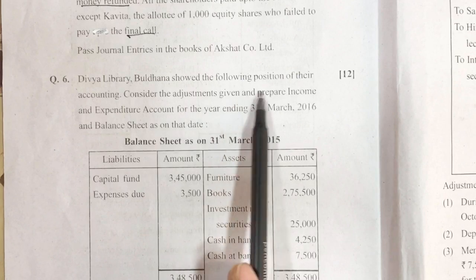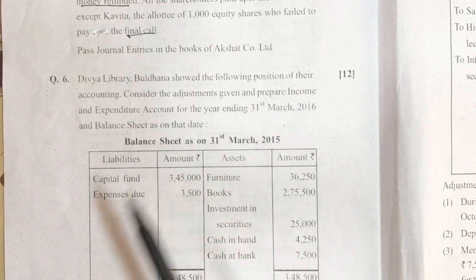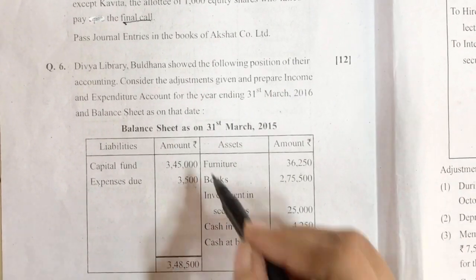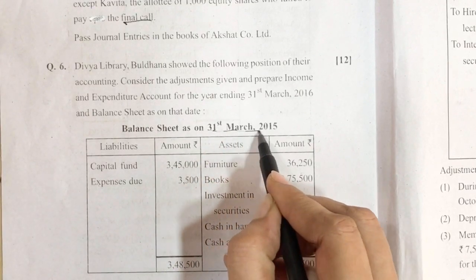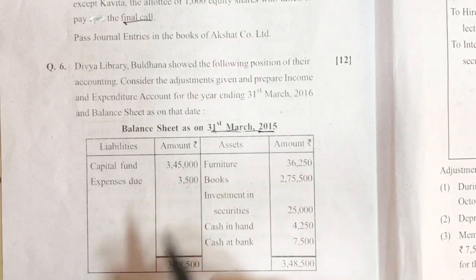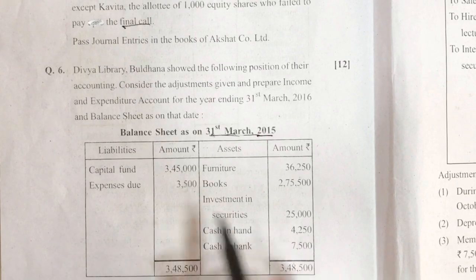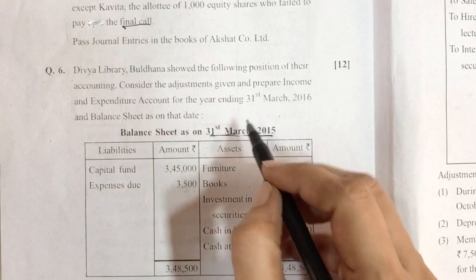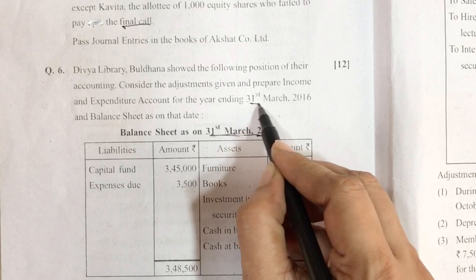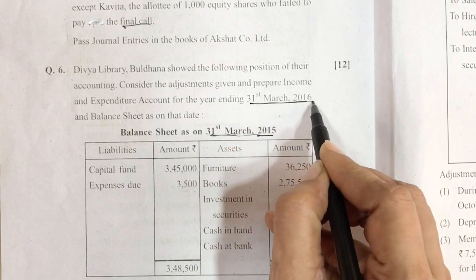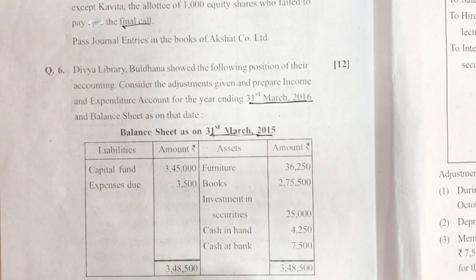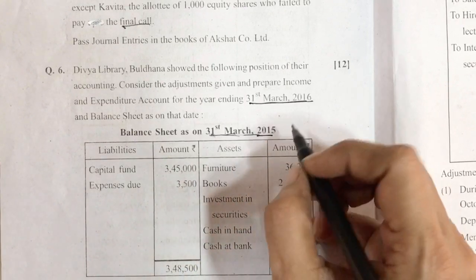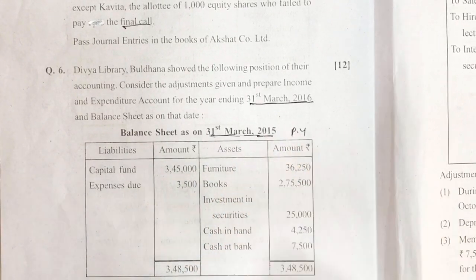Divya Library Buldana showed the following position. A balance sheet is given to you as on 31st March 2015, and what we are required to prepare is the income and expenditure account and balance sheet on 31st March 2016. This balance sheet given to us of 31st March 2015 means it is the previous year balance sheet.